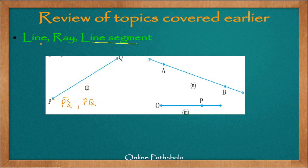Now let us look at a line. A line is nothing but the concept of a line segment extended further. In a line there are no endpoints. We have two points and they are extending — this line is extending infinitely in both directions, and that is what the arrows represent.